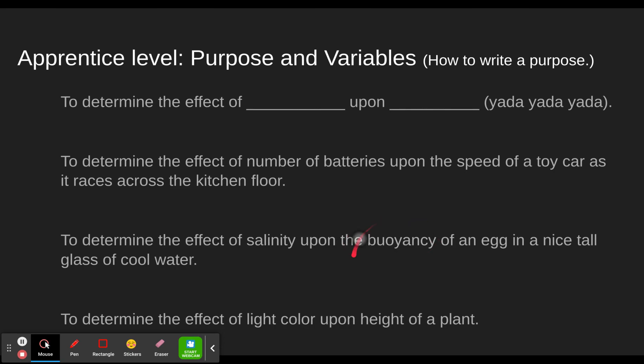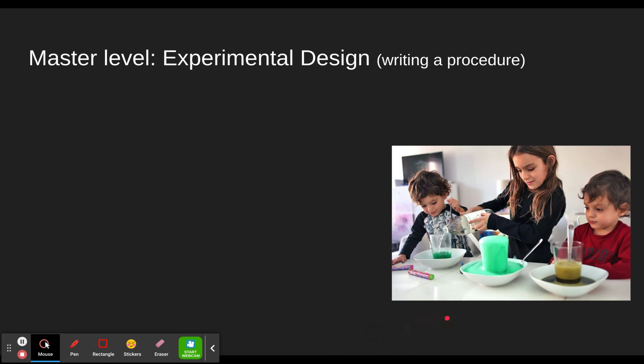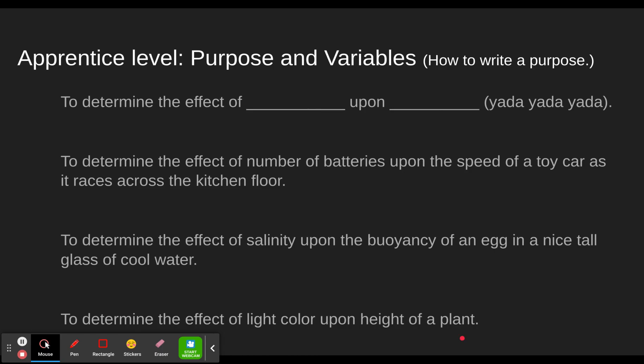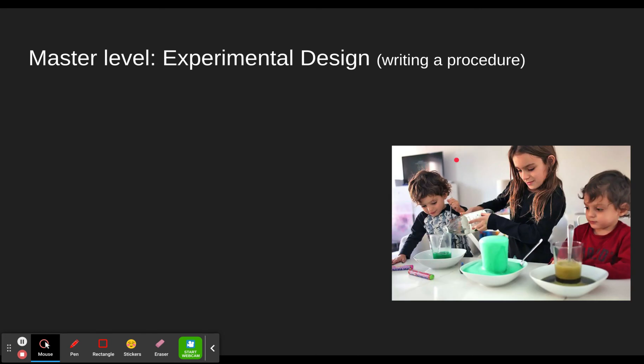So effect of, here's the independent, upon the buoyancy. Now you don't have to use the word upon. It doesn't have to exactly say the effect of, so you may have to adjust that a little bit. A lot of them use this same phrasing. So once again, salinity independent, buoyancy dependent. To determine the effect of light color upon the height of a plant. These are the ones we talked about, right? So here's a nice purpose. To determine the effect of the light color. And if you wanted to be more physics, you could say the frequency of the light. Upon the height of the plant. There's the dependent variable. Independent. See how it affects the dependent height. So don't be thrown off with the other stuff that gets thrown in at the end of some of these, like across the kitchen floor. We're not measuring the kitchen floor. It's the speed that we're looking at.